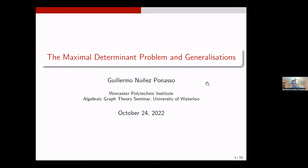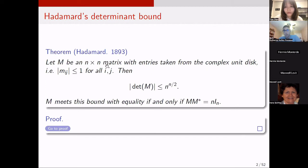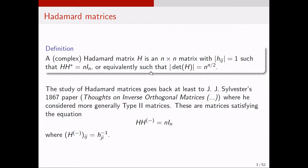Let's start with Hadamard's determinant bound, which says that if you have a square matrix of order n with entries taken from the complex unit disk — that means the absolute value of every entry of M is bounded above by 1 — then the determinant of the matrix cannot exceed in absolute value n to the n over 2. And this bound is met with equality if and only if M M conjugate transpose is n times the identity. So if a matrix meets that bound, then it is called a Hadamard matrix or a complex Hadamard matrix.